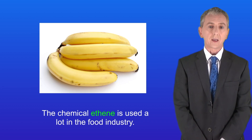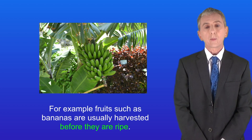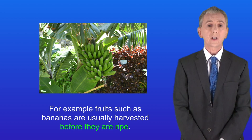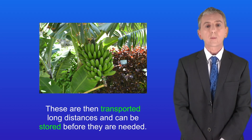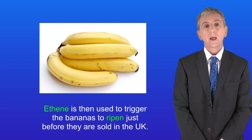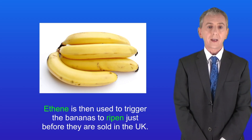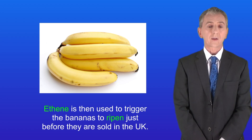The chemical ethene is used a lot in the food industry. For example, fruits such as bananas are usually harvested before they're ripe. These are then transported long distances and can be stored before they're needed. Ethene is then used to trigger the bananas to ripen just before they're sold in the UK.